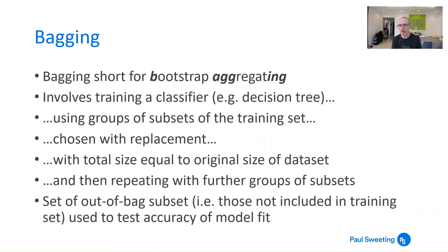Bagging on the other hand is bootstrap aggregating. And it involves using a classifier such as a decision tree with subsets of the original training set which you choose with replacement. So if you've got 500 firms you take maybe 150 and you fit your tree on that. Then you take another 150 which might include some of the original ones. You fit your tree to that and so on. So you're choosing with replacement. But the set you've got is actually the same size as your original set, but it's going to have some duplicates in there. And you repeat this with further groups of subsets from the original data.